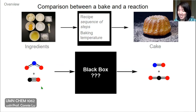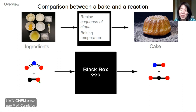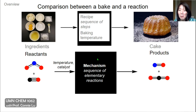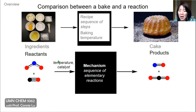A reaction is very similar — sometimes we want to understand a chemical reaction fundamentally, but also so that we can use that knowledge to apply it. Our ingredients are our reactants and the products, and here instead of a recipe, in chemistry we call this a mechanism. It's a sequence of elementary reactions, and our inputs could also be the temperature of the reaction and whether we've added a catalyst or not.